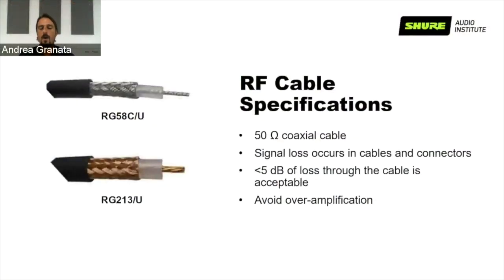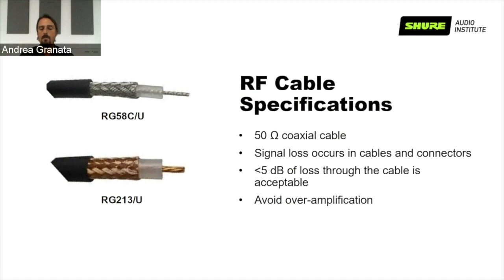It's a strange thing to discuss cables in a wireless webinar, but yes — cables matter. All UHF professional and semi-professional wireless systems use 50-ohm coaxial cable and 50-ohm connectors. This is something we can never compromise on in an installation. 75-ohm cables serve other purposes but are not good for wireless systems — even if the connector physically works, there is significant loss and standing waves from impedance mismatch. So 75-ohm is a definite no.